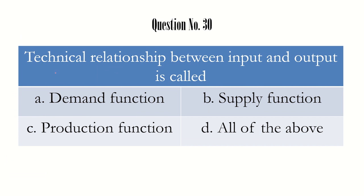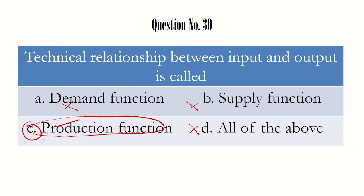The last question: the technical relationship between input and output is called what? Input and output are terms used in production, so the concept connecting them is the production function. It cannot be the demand function, which relates the determinants of demand, nor the supply function, which talks about determinants of supply. So the answer is option C: production function. With this we come to the end of these 10 questions covering production and cost. Thank you so much.